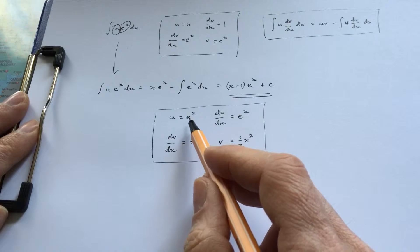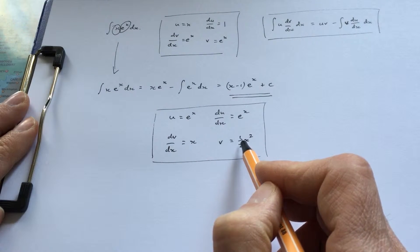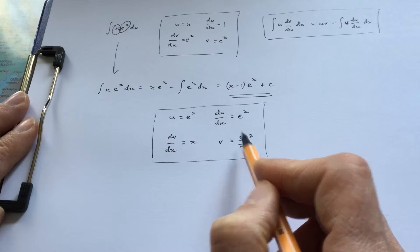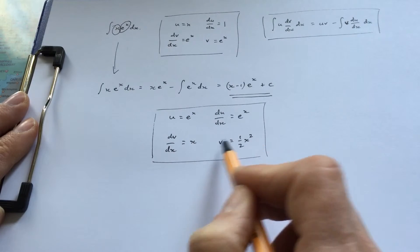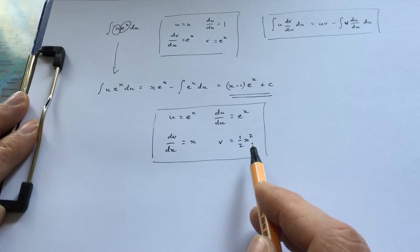When I do it the wrong way, x gets more complicated. I've got x² now and e^x is the same. I'm making the problem more complicated than it was.